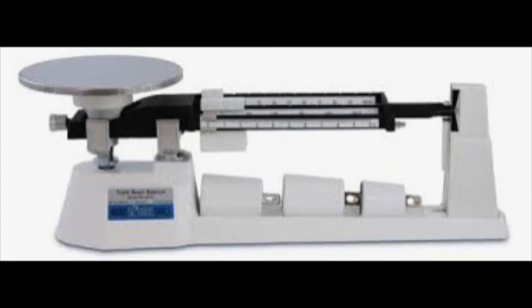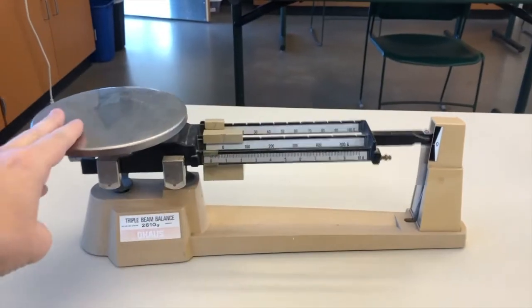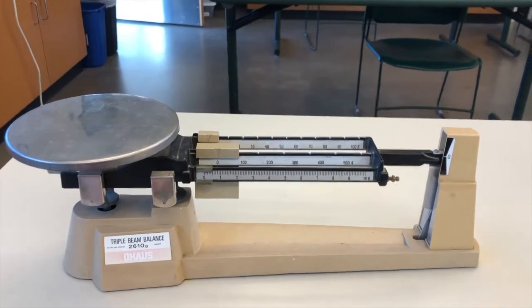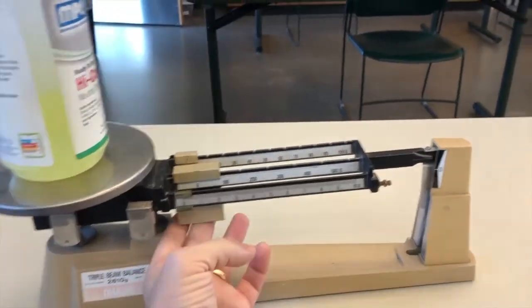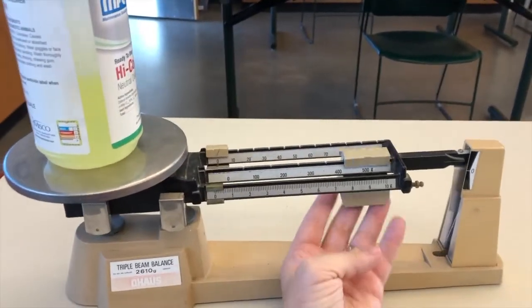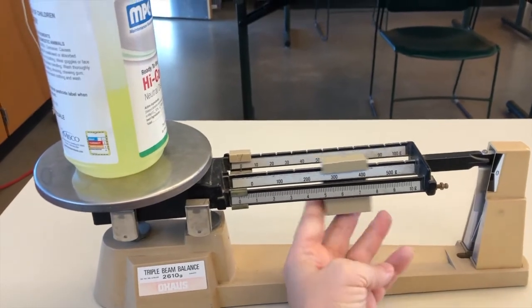The balance measures mass. It is called a balance because it has a fulcrum, and when you use it, you are saying that the object you are measuring is made out of the same amount of stuff as the pre-measured metal slugs on the other side.